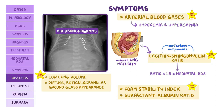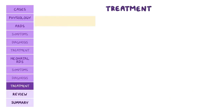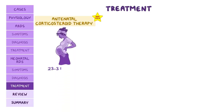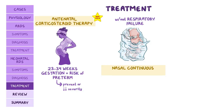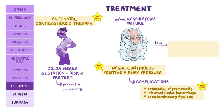Other prenatal tests include the foam stability index and surfactant-albumin ratio. Regarding treatment, antenatal corticosteroid therapy should be administered to all pregnant individuals at 23 to 34 weeks gestation who are at increased risk of preterm delivery, to prevent or decrease the syndrome's severity. Without respiratory failure, nasal continuous positive airway pressure (nCPAP) is the preferred initial intervention. Complications of supplemental oxygen can include retinopathy of prematurity, intraventricular hemorrhage, and bronchopulmonary dysplasia. If nCPAP fails, endotracheal intubation and intratracheal surfactant therapy are needed.